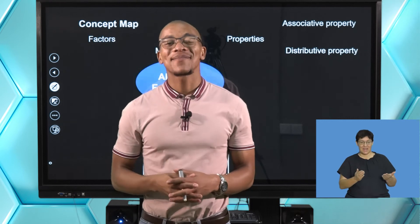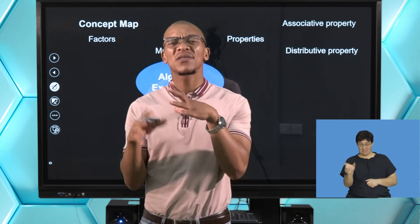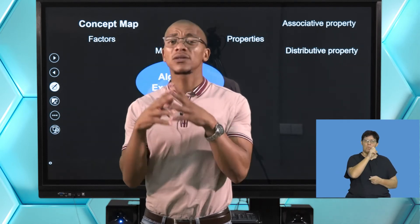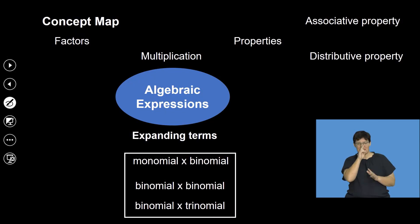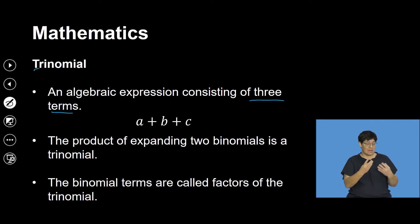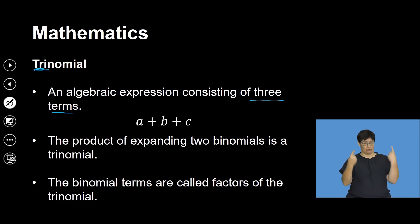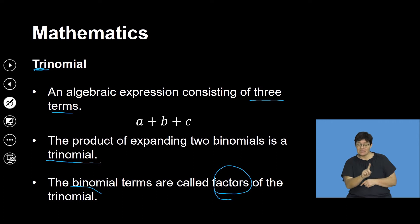Welcome back from the break. We're still looking at expanding terms under algebraic expressions. We've looked at binomials and monomials — now we're going to look at a trinomial and a binomial. A trinomial is an algebraic expression that consists of three terms. The product of expanding two binomials is called a trinomial, and those two binomials that we multiply are called factors of the trinomial.